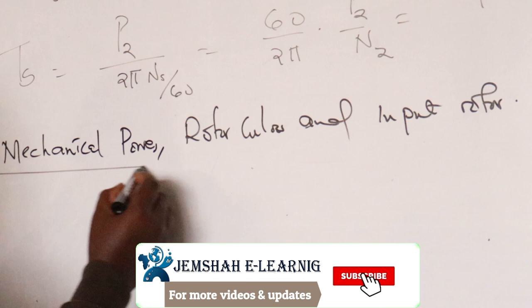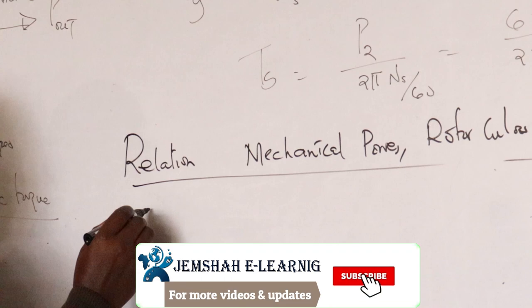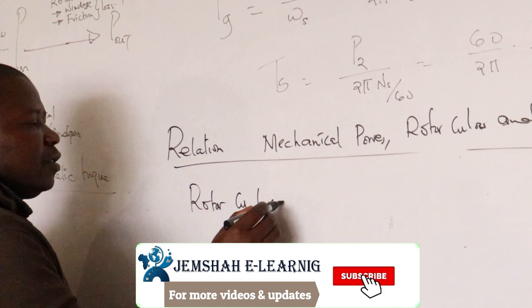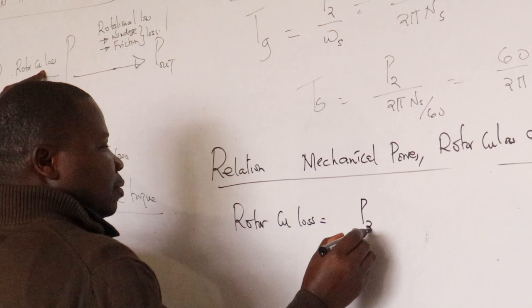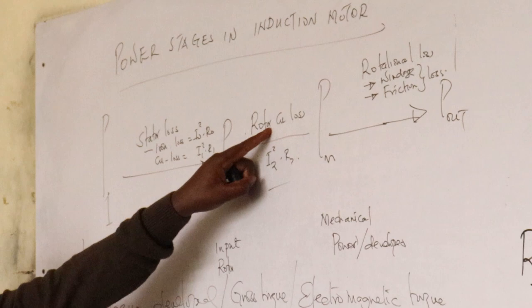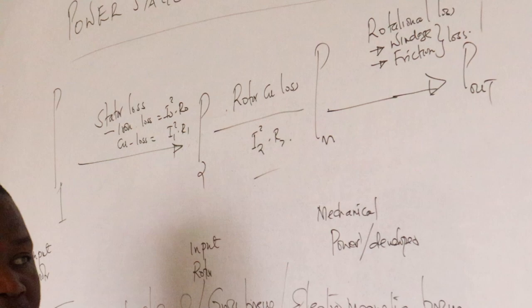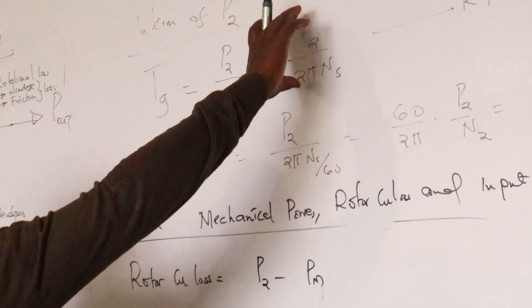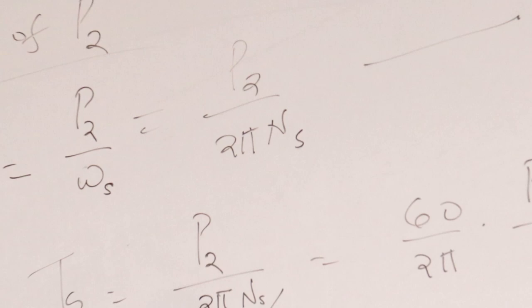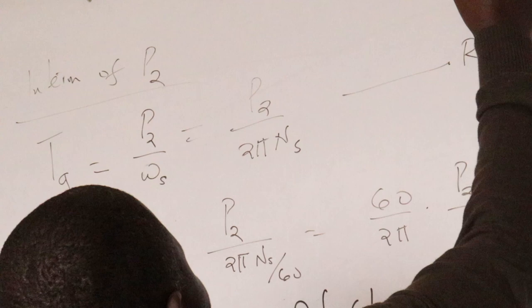We know that rotor copper loss is equal to P2 minus Pm. Rotor copper loss means P2 minus Pm. And therefore, let me work this sideways: Tg is equal to P2 divided by 2 pi Ns, so what will be P2? P2 will be 2 pi Ns times Tg.